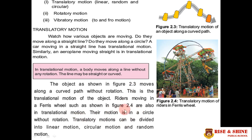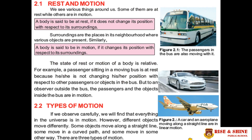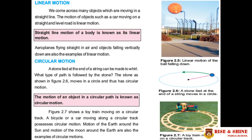Translatory motion can be divided into linear, circular, and random motion. The first type is linear motion: straight line motion of a body is known as linear motion. For example, a car moving on a level road and an aeroplane moving along a straight line are both in linear motion.